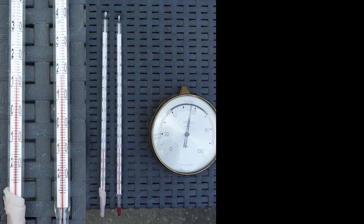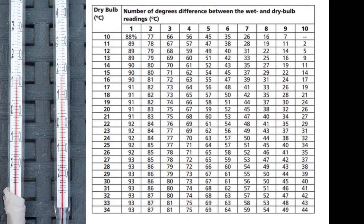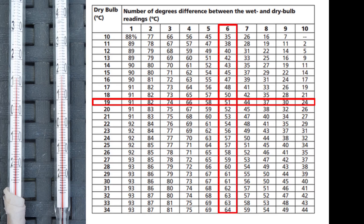The wet bulb thermometer is 13 degrees Celsius. Now you can use a table like this one to determine the relative humidity. First, read off the dry bulb temperature, 19 degrees. The wet bulb temperature is 6 degrees lower than the dry bulb temperature, so you look up 6 at the top of the table. Apparently the relative humidity is 51%, which is close to the 52 and 56% of the two hygrometers.